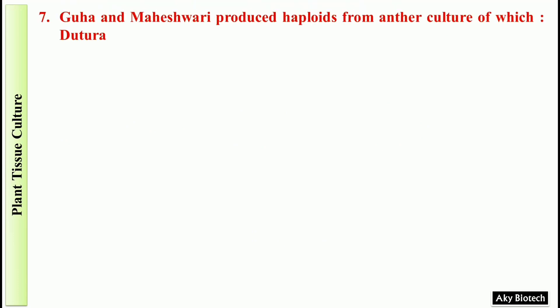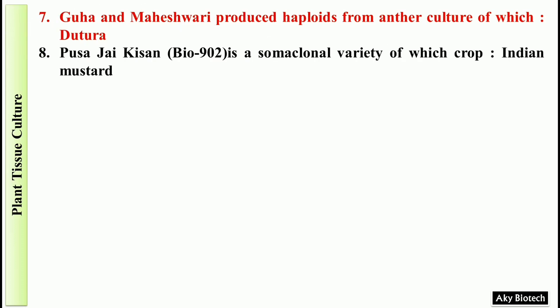Question 7: Guha and Maheshwari produced haploids from anther culture of which plant? The answer is Datura — this question is also very important. Question 8: Pusa Jai Kisan Bio 902 is a somaclonal variety of which crop? It is Indian mustard.